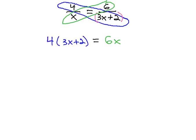This will give us a general linear equation, which we should be very comfortable solving by first distributing the 4 to get 12x plus 8 equals 6x.